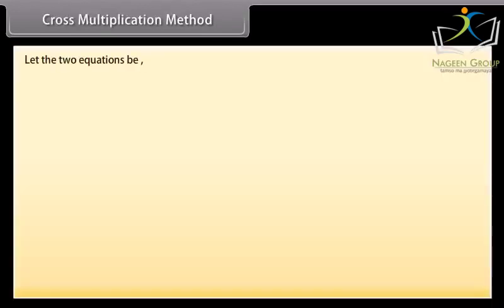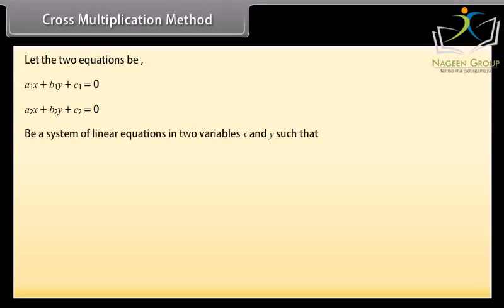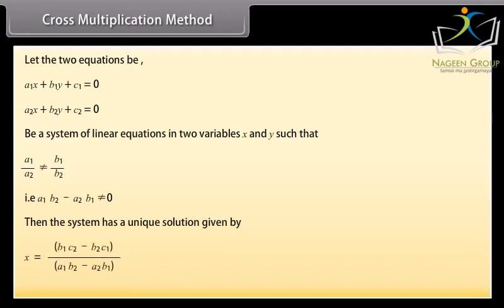For the cross multiplication method, let the two equations be a1x + b1y + c1 = 0 and a2x + b2y + c2 = 0 such that a1/a2 ≠ b1/b2 — that is, a1b2 − a2b1 ≠ 0. Then the system has a unique solution: x = (b1c2 − b2c1) / (a1b2 − a2b1) and y = (c1a2 − c2a1) / (a1b2 − a2b1).